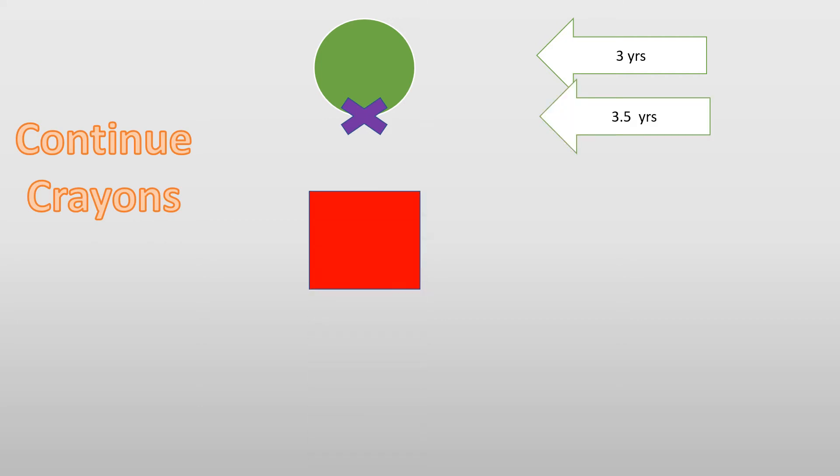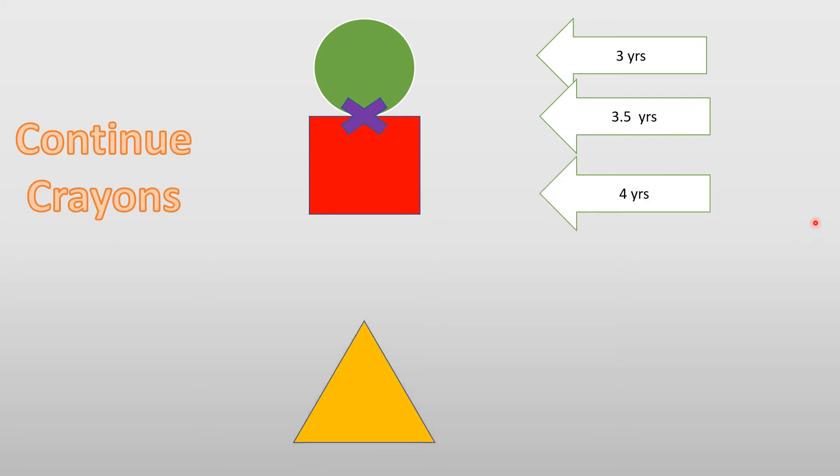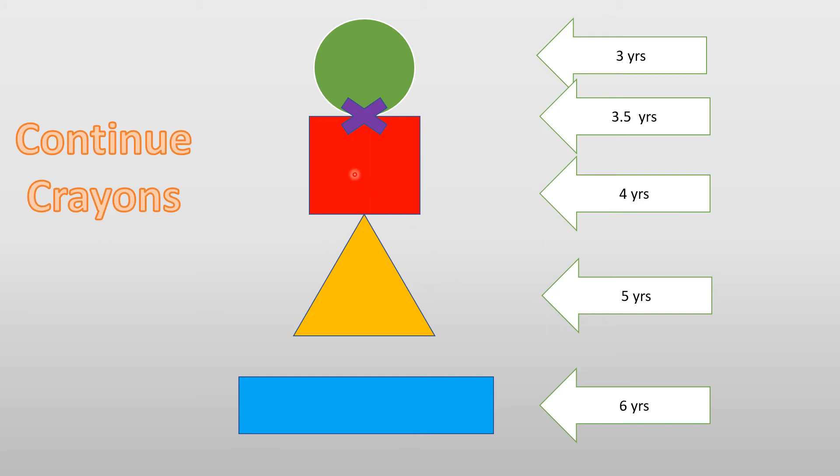The second part of the crayon is drawings. For the drawings, if he could draw a circle, he will be three years. If he could make a cross, he will be three and a half. If he makes this shape, he will be four years. And triangle, five years. And rectangle, six years. Notice that these shapes look like a lady wearing a necklace. Looks like a cross. So it is easier to remember in a sequence: circle, the shape, and triangle, and rectangle.